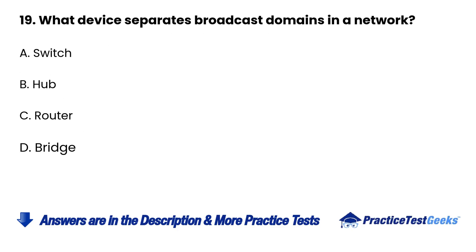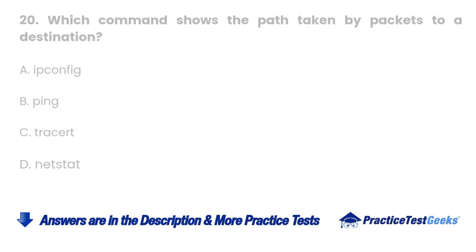Question 19: What device separates broadcast domains in a network? A. Switch. B. Hub. C. Router. D. Bridge.